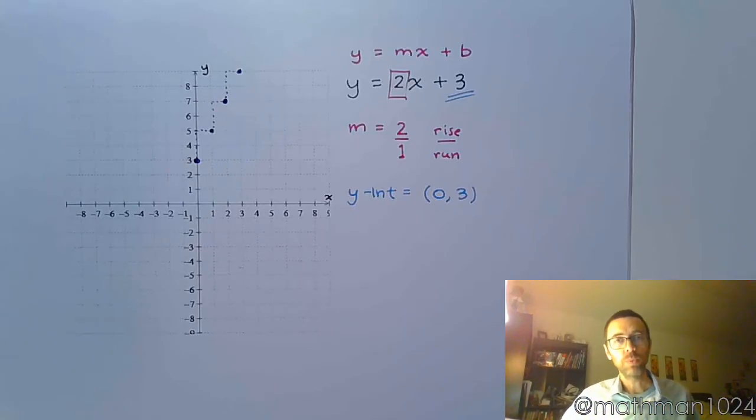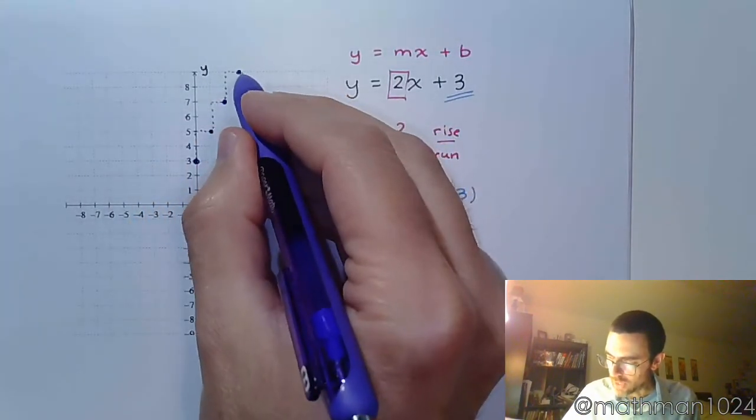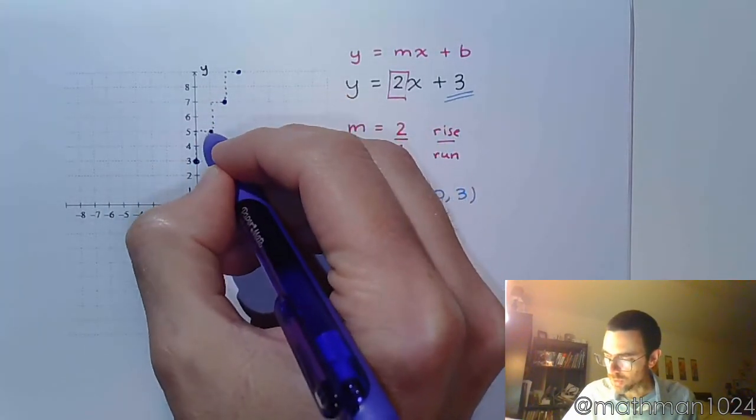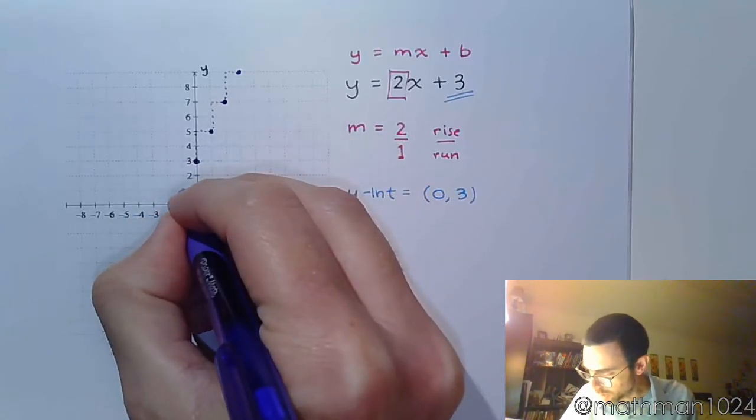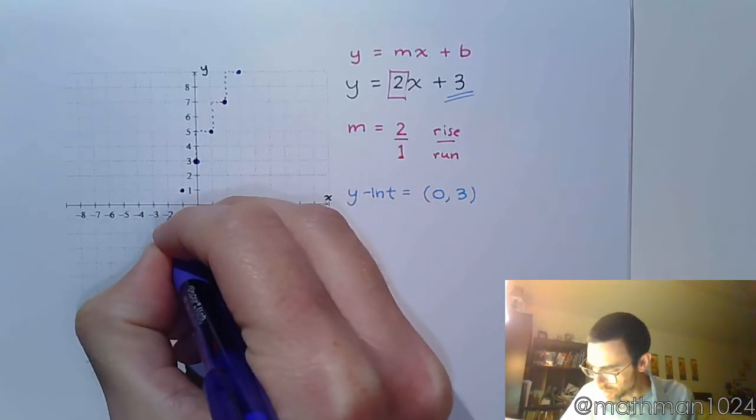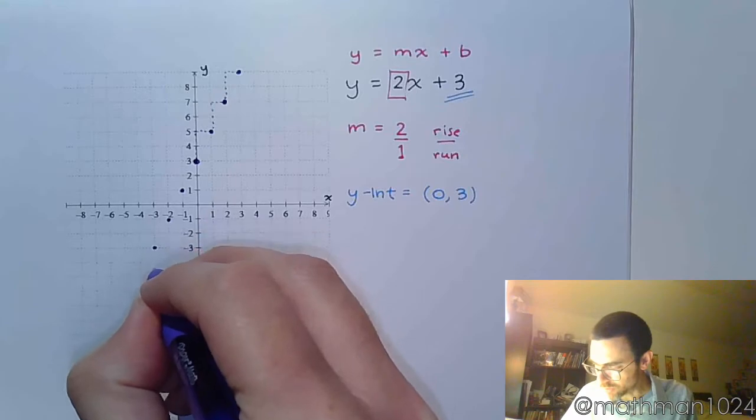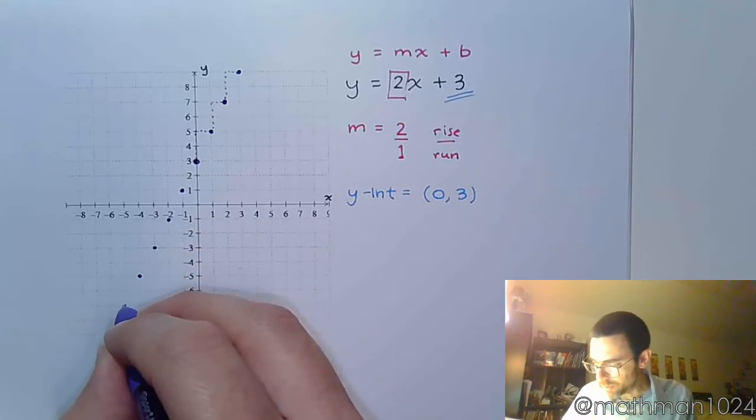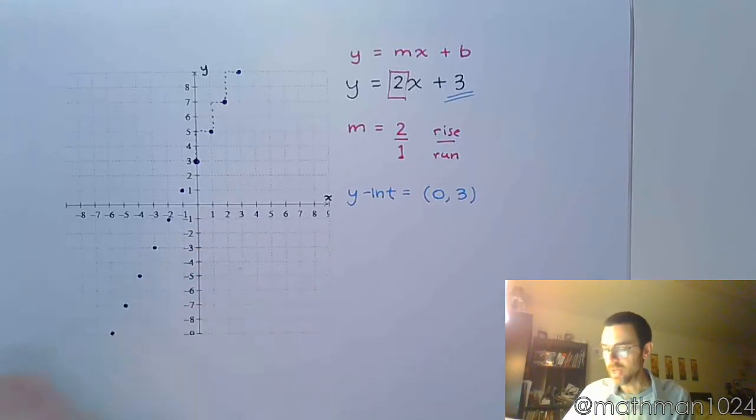If we keep going in that same pattern, up 2 over 1, up 2 over 1, we can get more points by reversing that. Instead of going up and to the right, we can go down and to the left. You go down 2, left 1, down 2, left 1, and so on. Keep that pattern going all the way to the edge of the graphing window.